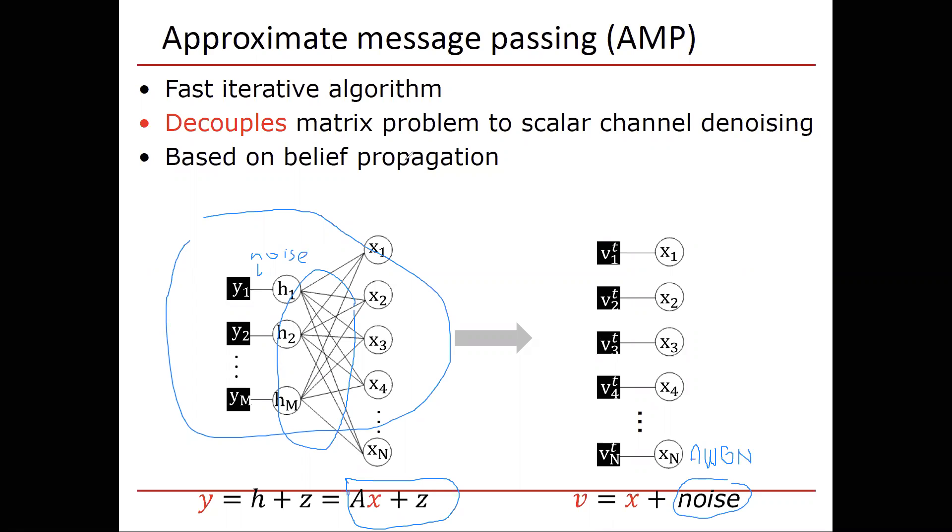So we now have a scalar channel denoising problem. As a comment, why is it called approximate message passing? Because there's a family of algorithms approaches called belief propagation that involves passing messages on a graph. And we are approximating a precise belief propagation approach.